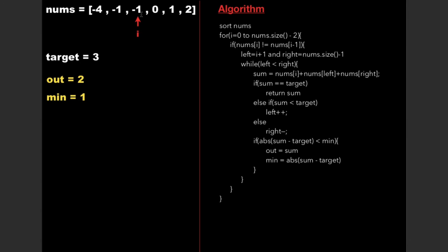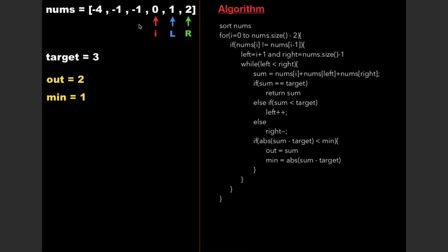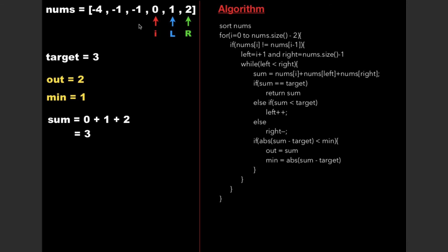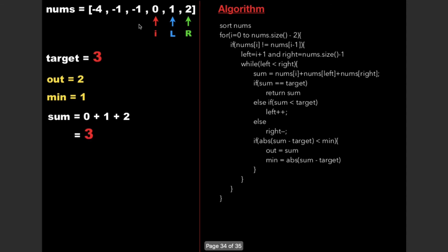Now i points to -1 again, but nums[i] equals nums[i-1], so we fail the condition and increment i. Now i points to 0, with left and right pointing to 1 and 2 respectively. We calculate sum = 0 + 1 + 2 = 3, which equals the target, so we directly return sum.